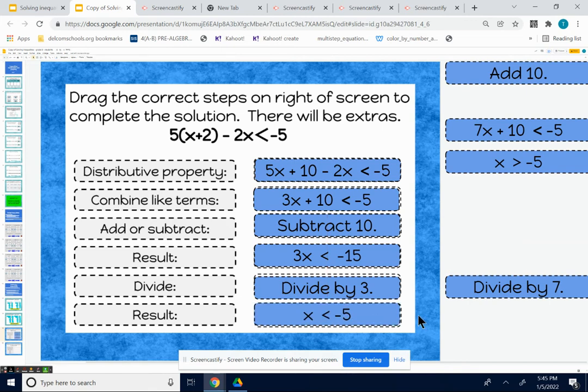I want to point out real quick, a lot of kids will think that you reverse the inequality symbol when you end up with a negative answer. That negative answer has nothing to do with anything. The reason why you switch an inequality is if you divide or multiply by a negative. And we did not divide by negative. We divided by a positive 3. So that inequality remains less than. So the final answer would be x is less than negative 5.